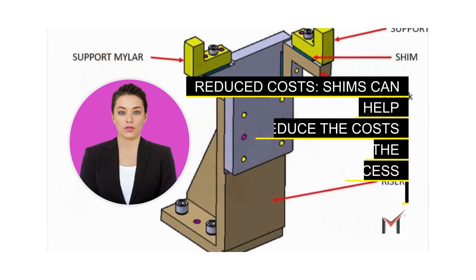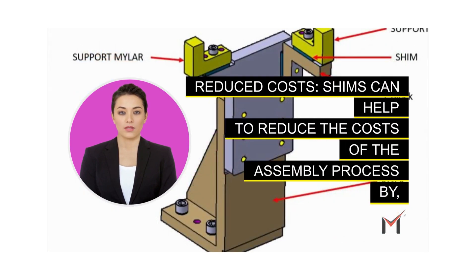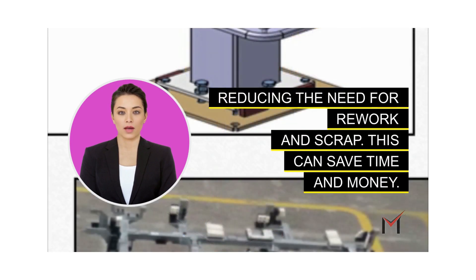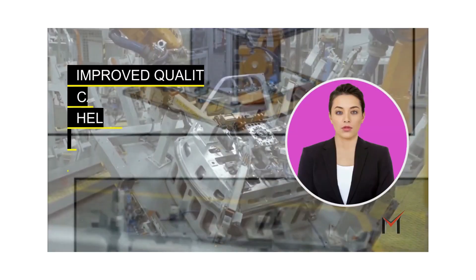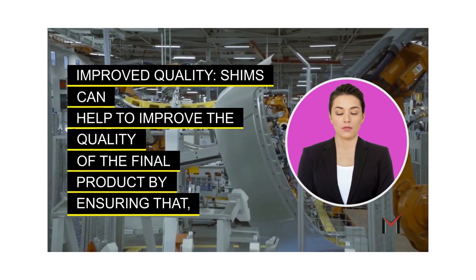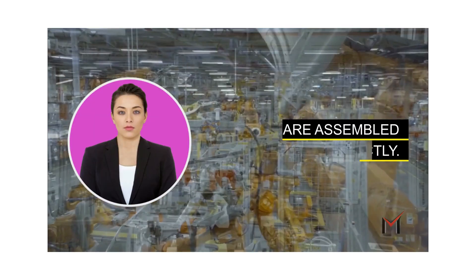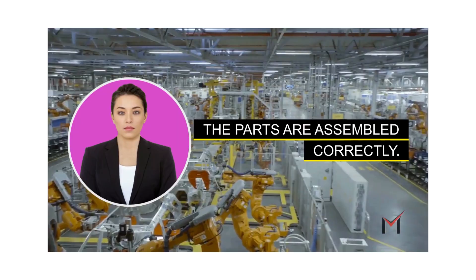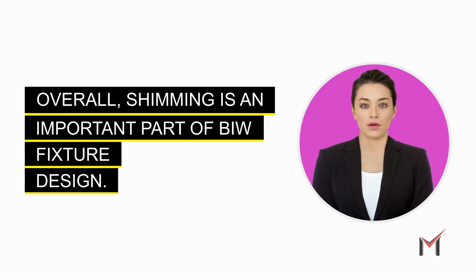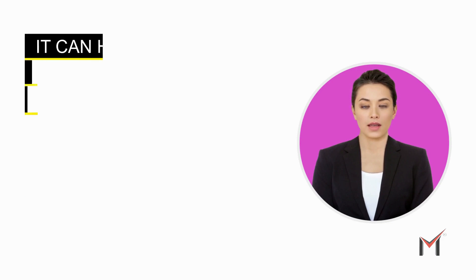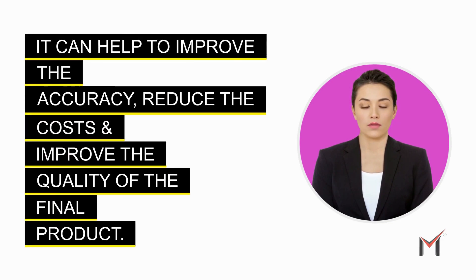Reduced costs: shims can help to reduce the costs of the assembly process by reducing the need for rework and scrap, saving time and money. Improved quality: shims can help to improve the quality of the final product by ensuring that the parts are assembled correctly. Overall, shimming is an important part of BIW fixture design — it can help to improve accuracy, reduce costs, and improve the quality of the final product.